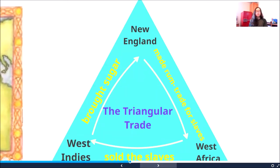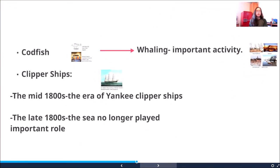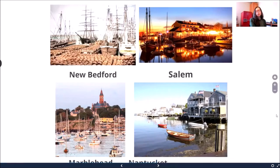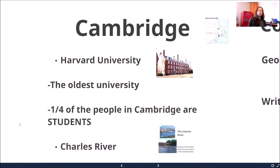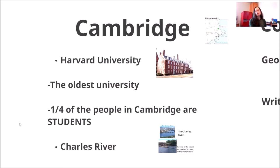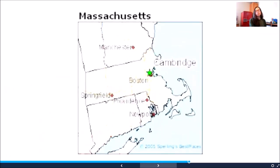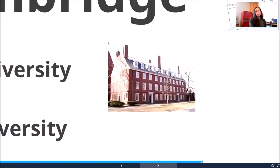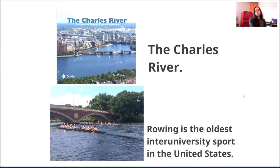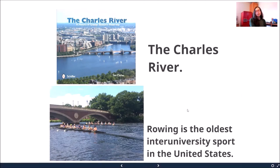They took other goods as well, but that was the primary trade. Fishing for codfish and whaling were also important activities. Clipper ships — those fast-moving Yankee ships — were prominent in the mid-1800s, but towards the late 1800s the sea was no longer such an important role. Some of your whaling towns were New Bedford, Salem, Nantucket, and Marblehead. Harvard University is the oldest university, built in the 1600s; a quarter of the people who live in Cambridge today are students. It is built on the Charles River, just outside of Boston. Rowing is the oldest inter-university sport in the United States, and they still row on the Charles River today.